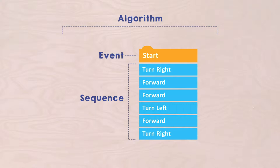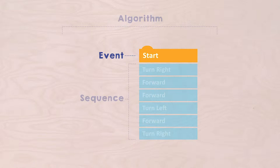In programming language, such an action is called an event. In a computer program that event can be, for instance, the click of a mouse or pressing a key on the keyboard. In our program, the START block is the action that will allow our program to start.